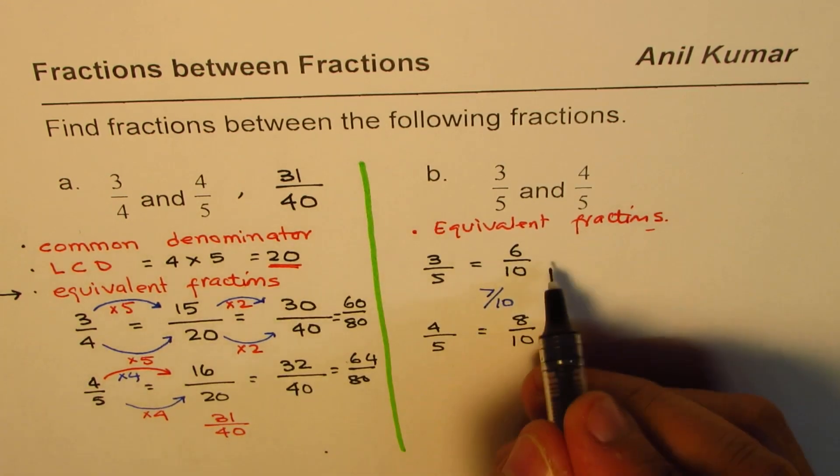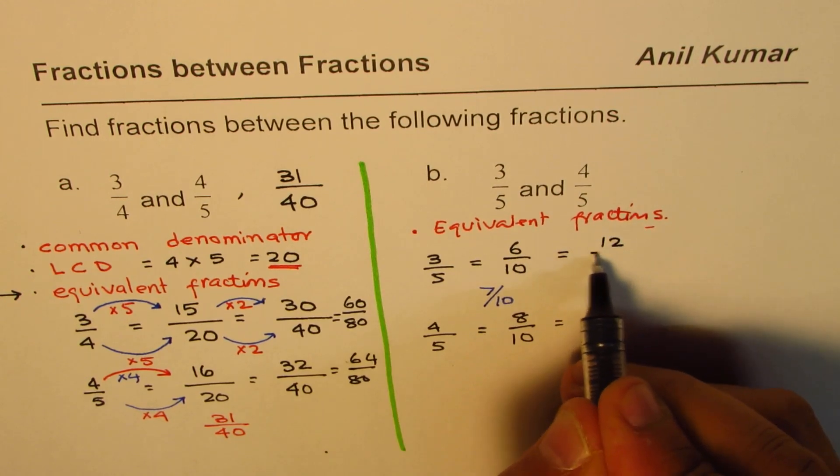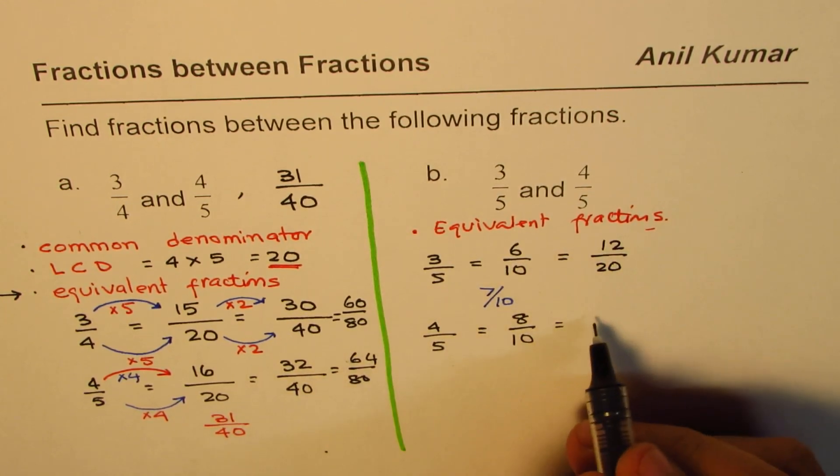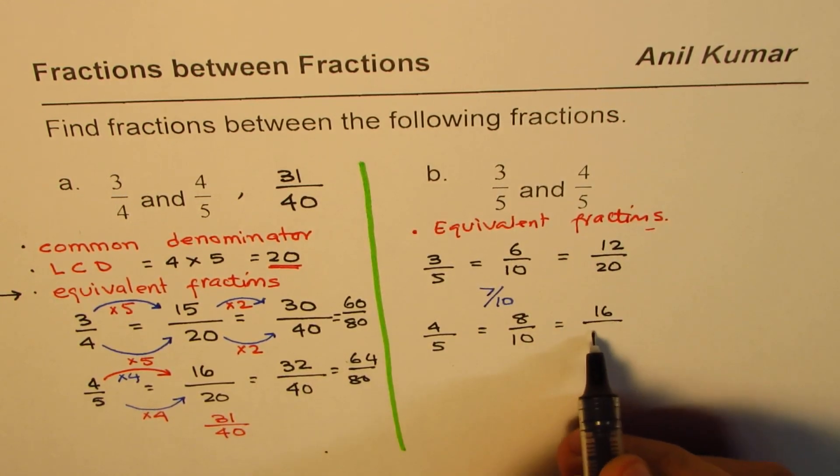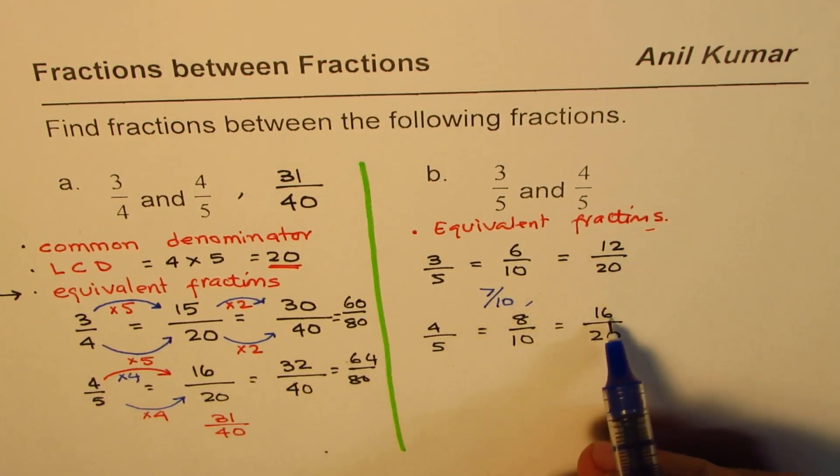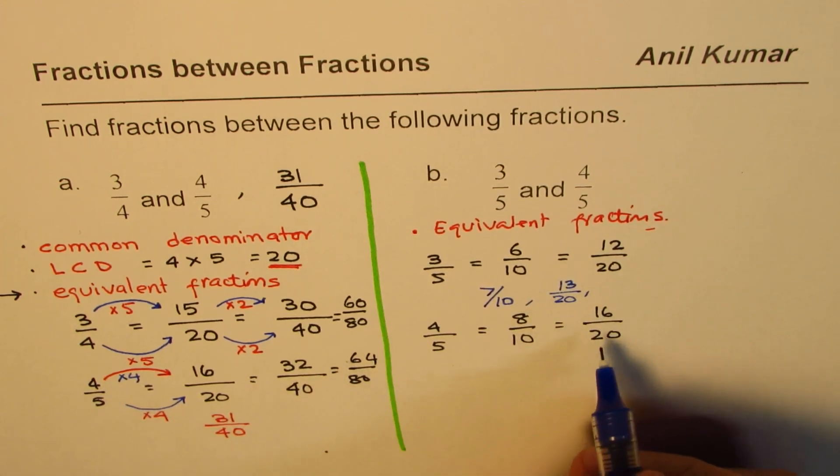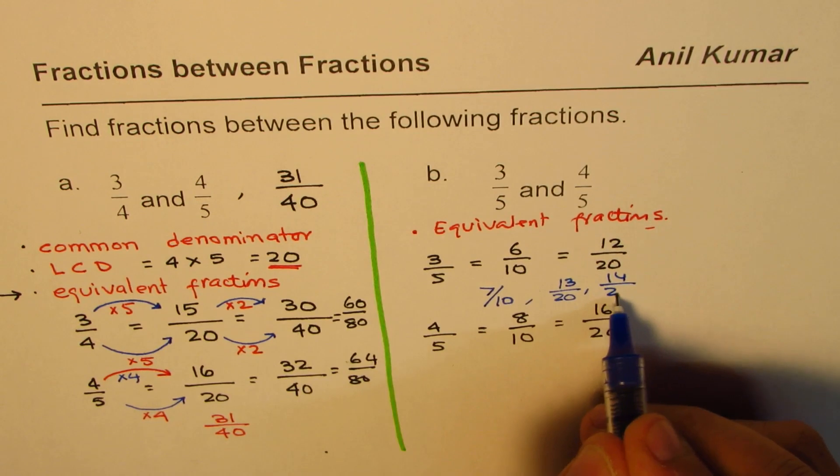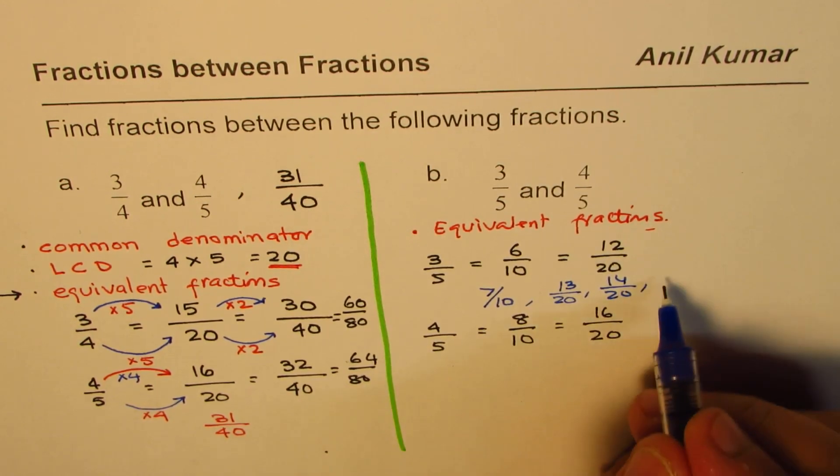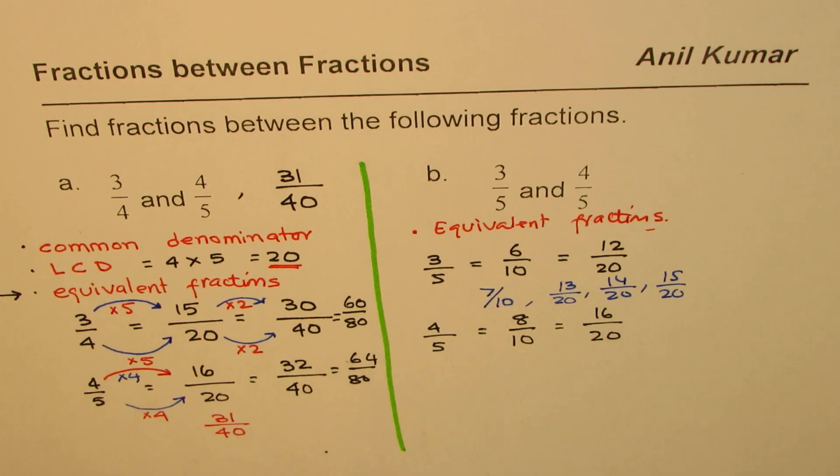But if I need more, I have to write more equivalent fractions. That is the key. So we can write this as 12 over 20. Keep multiplying by 2. 16 over 20. And now you can write some more. Some more will be between 12 and 16. So it could be 13 over 20, or it could be 14 over 20, or even 15 over 20. This list is endless.